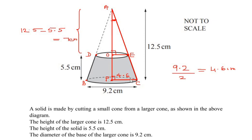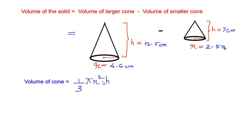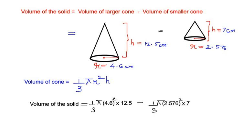Now that we have the radius of the smaller cone, let us work out the volume of the solid. The volume of the solid equals the volume of the larger cone minus the volume of the smaller cone. The formula for the volume of a cone is (1/3)πr²h. Using this formula: Volume = (1/3)π(4.6)²(12.5) minus (1/3)π(2.576)²(7).